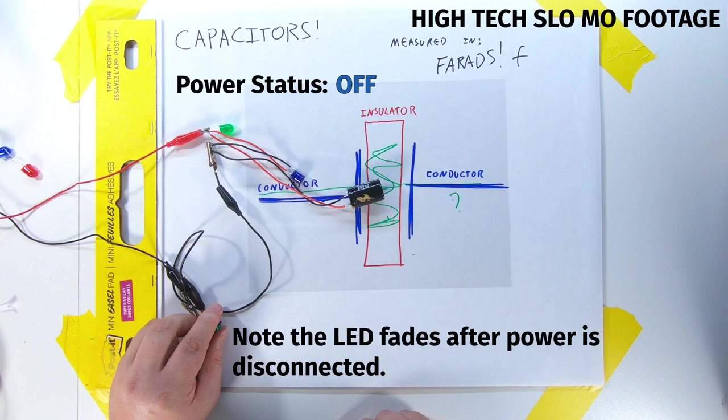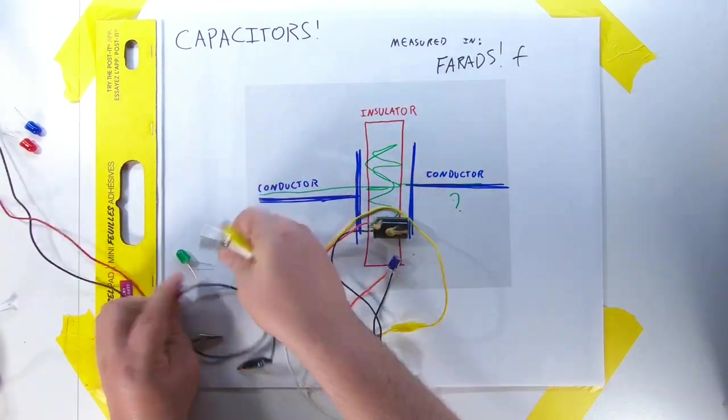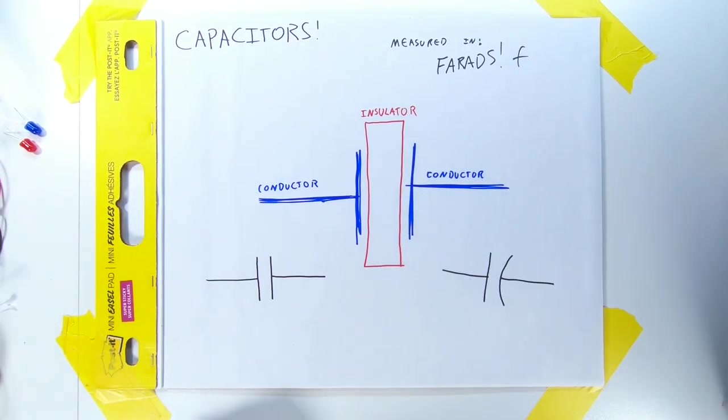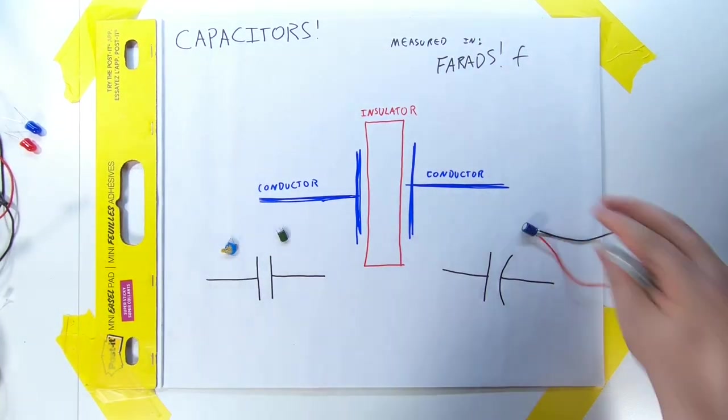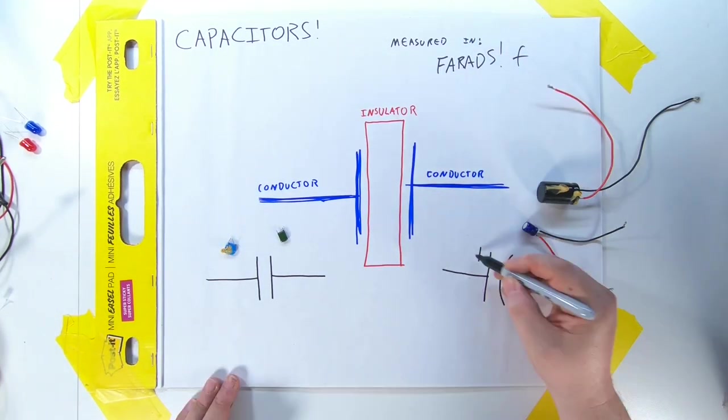Finally, capacitors have two distinct schematic symbols, which look pretty similar to the model I have displayed here. One for capacitors that will work in either direction, and another for if they have a specific polarity requirement.